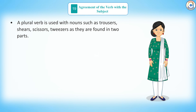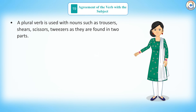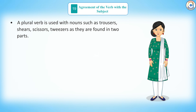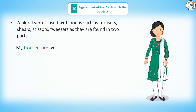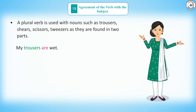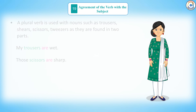Rule 5: a plural verb is used with nouns such as trousers, shears, scissors, and tweezers, as they are found in two parts. For example: my trousers are wet; those scissors are sharp.